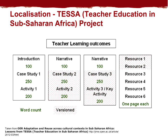The main difference is that in TESS India, localisers were guided to keep the core essence and quality of the materials the same but were allowed to change any aspect they wanted. Whereas in TESSA, a decision was made that only 40% of the materials would be open for adaptation — the same 40% for every unit. So in every TESSA unit, the introduction, case study one, and activity one were the same across all versions. The intention was to ensure the integrity and internal consistency of the original OER. Our aim wasn't to compare the two projects but to explore the differences.